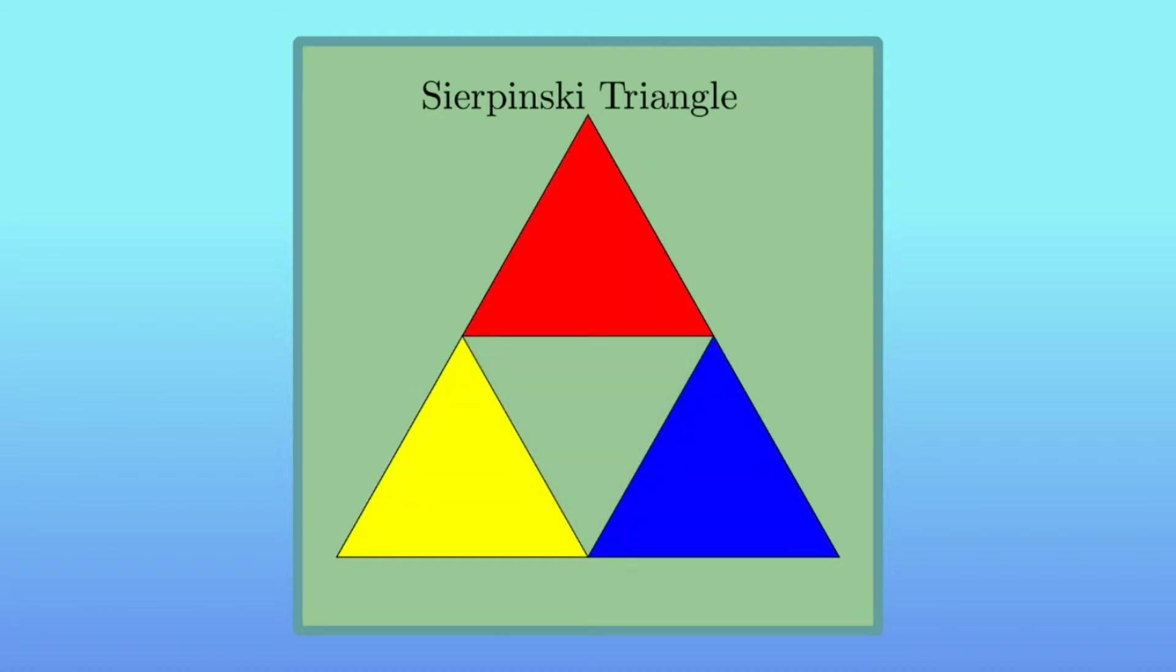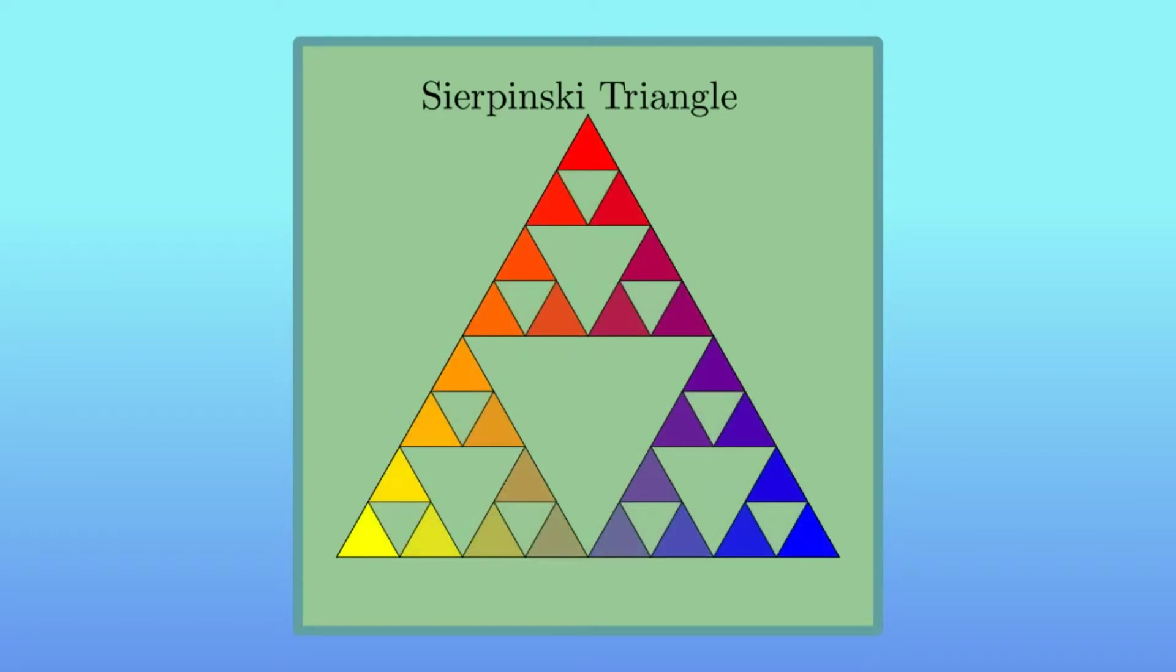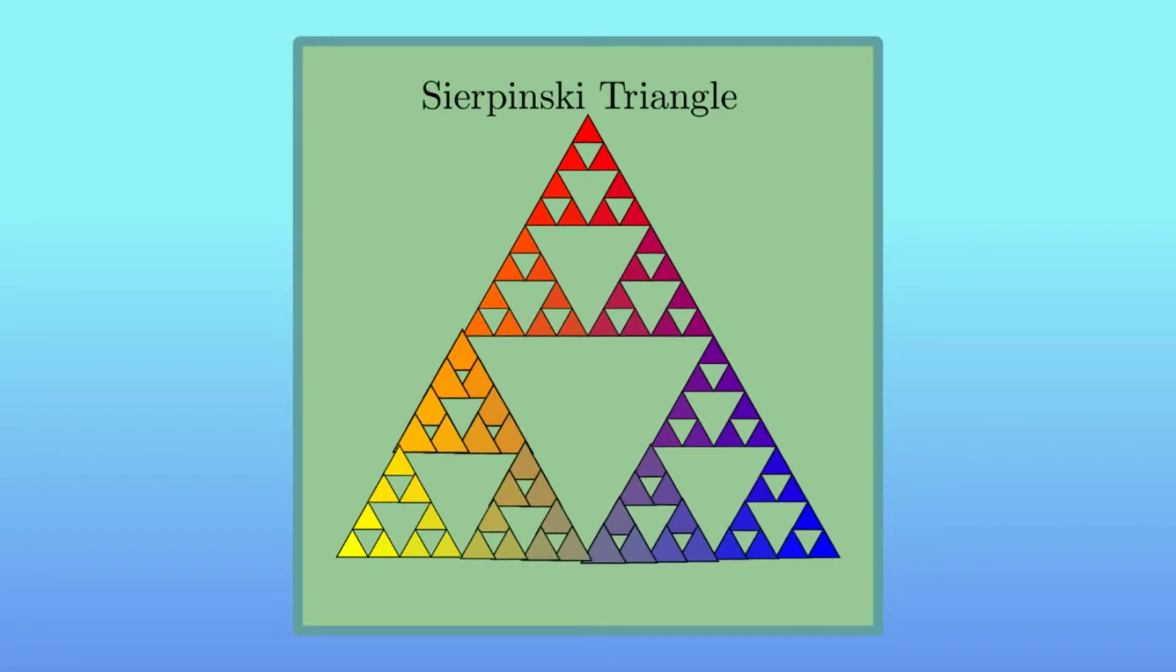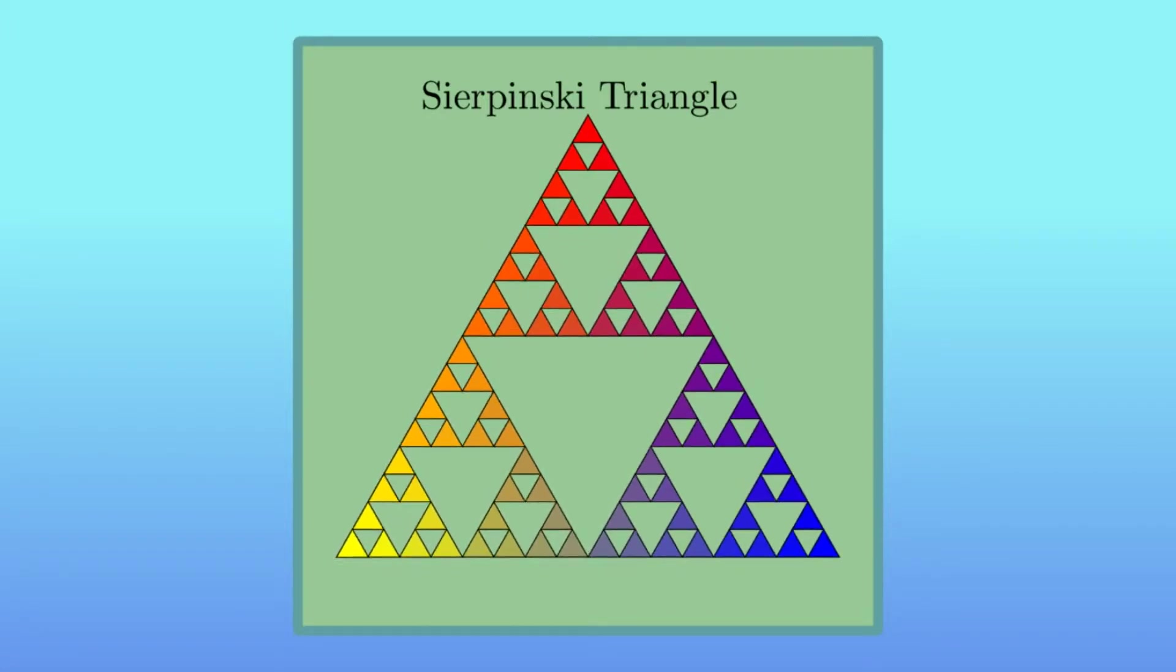Do the same with the remaining three triangles, and then again with the remaining nine triangles, and so on. The problem with this construction is that the number of triangles in each step that we need to remember grows exponentially, not to mention that we need to compute the middle of each of them.